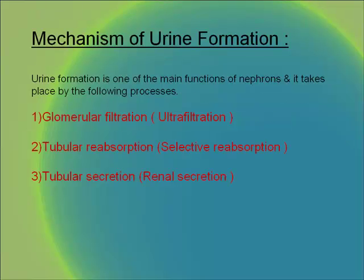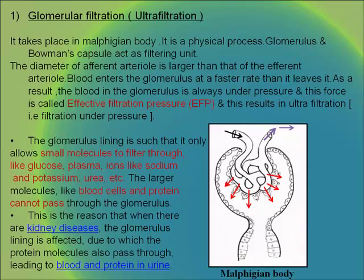Urine formation is one of the main functions of the nephrons and takes place by glomerular filtration or ultrafiltration, tubular reabsorption or selective reabsorption, and tubular secretion or renal secretion. Glomerular filtration takes place in the Malpighian body and is a physical process. The diameter of the afferent arteriole is larger than that of the efferent arteriole, so blood enters the glomerulus faster than it leaves, keeping it under pressure; this force is called the effective filtration pressure (EFP), resulting in ultrafiltration.